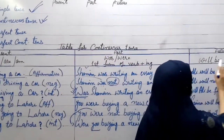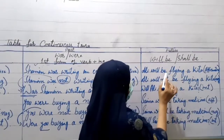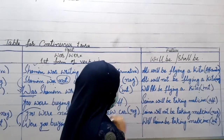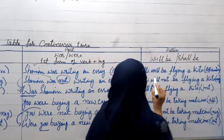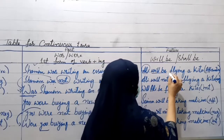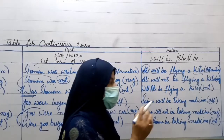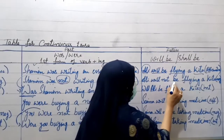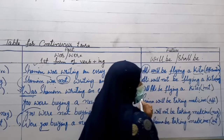We will move towards the future continuous tense. The structure: subject, then 'will be' or 'shall be', then the first form of the verb with I-N-G, then object. Example 1: 'Ali will be flying a kite.' Ali is the subject; just after the subject, write 'will be', then the first form of the verb with I-N-G, then object. For negative, put 'not' in between 'will' and 'be': 'Ali will not be flying a kite.' This is the negative sentence.